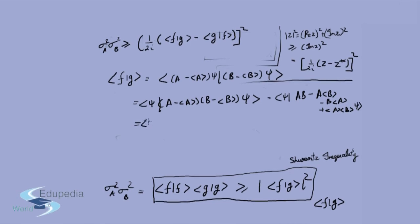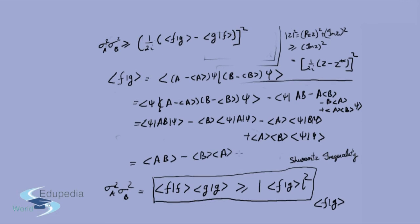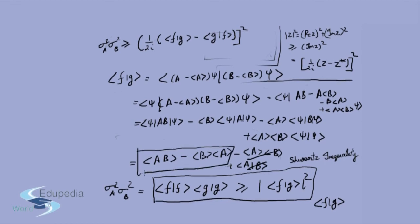Writing these as four separate inner products: ⟨psi|AB|psi⟩ minus ⟨B⟩⟨psi|A|psi⟩ minus ⟨A⟩⟨psi|B|psi⟩ plus ⟨A⟩⟨B⟩⟨psi|psi⟩. This gives ⟨AB⟩ minus ⟨B⟩⟨A⟩ minus ⟨A⟩⟨B⟩ plus ⟨A⟩⟨B⟩, since psi is normalized. The last two terms cancel, and what we are left with is ⟨AB⟩ minus ⟨B⟩⟨A⟩.